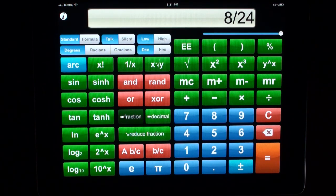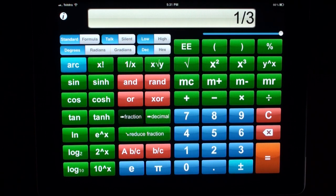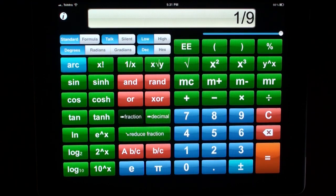Equals 8 over 24. Now let's reduce this fraction by clicking on the reduce fraction button. Reduce. 1 over 3. We can use our fractions with any of the other operators. Let's find out what the square of this fraction is. Squared. 1 over 9.